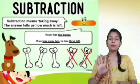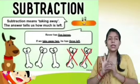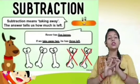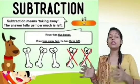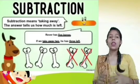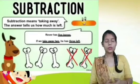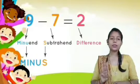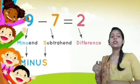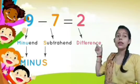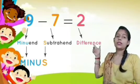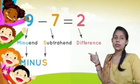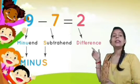One, two, three — so what is left is three bones. Next, subtraction has three parts: the greater part is called the minuend, the smaller part is called the subtrahend, and the answer after performing the subtraction is called the difference.